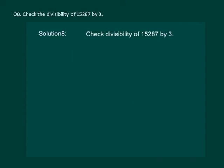Let us read the question. Check divisibility of 15287 by 3. Let us find the sum of the digits.